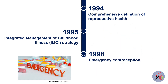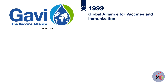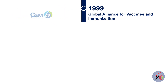In 1998, WHO played a pioneering role in emergency contraception by confirming the effectiveness of levonorgestrel, which resulted in changes in regulations in many countries and its inclusion in the list of essential medicines. Since then, these pills have been licensed in over 100 countries. The Global Alliance for Vaccines and Immunization was established in 1999 to overcome barriers preventing millions of children from receiving vaccines.